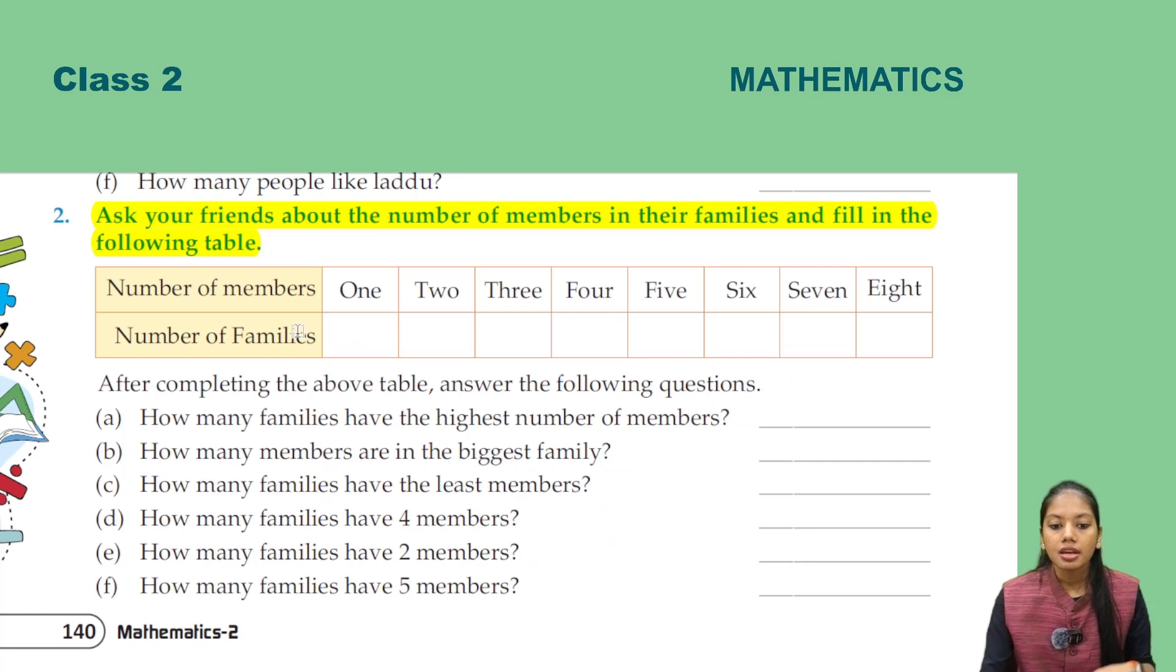Ask your four friends about the number of members in their families and fill in the following table. How many people in a family are in one member? How many in two members? Three members? Four members? Fill in this way.